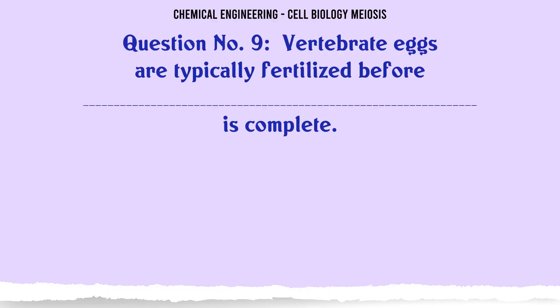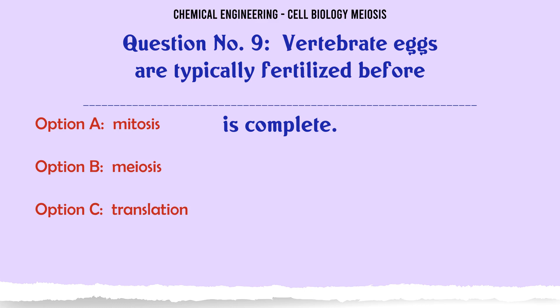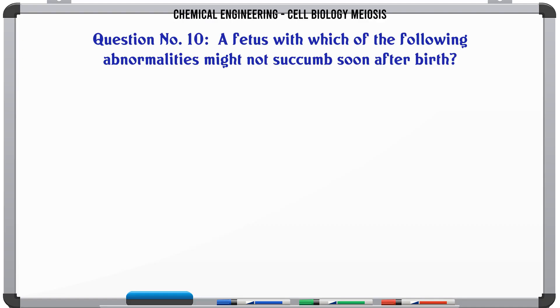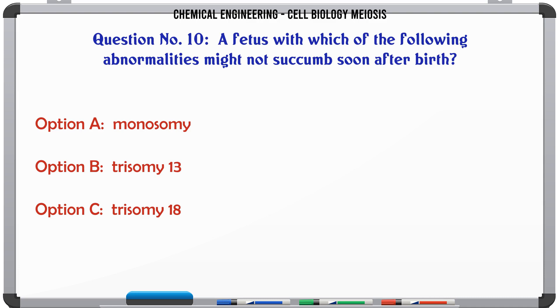Vertebrate eggs are typically fertilized before which process is complete? A. Mitosis. B. Meiosis. C. Translation. D. Transcription. The correct answer is Meiosis.